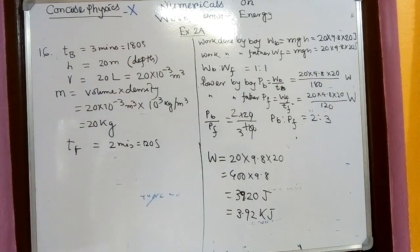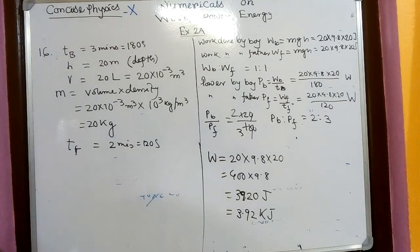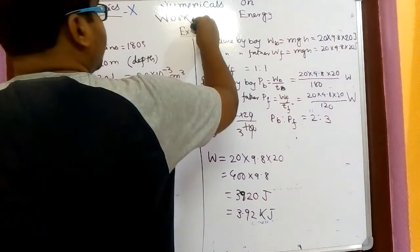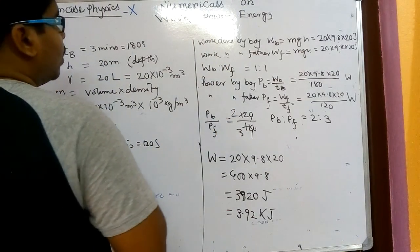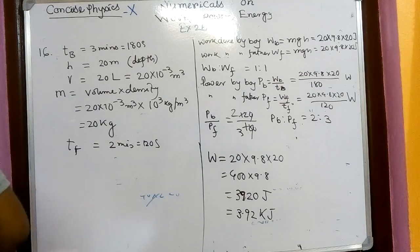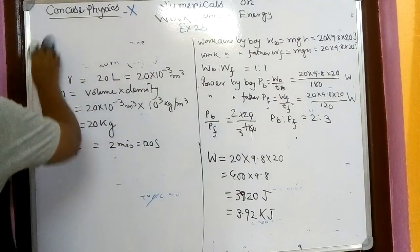Exercise 2A is completed — just copy it. Now we'll go for Exercise 2B. Here also we'll do two or three numericals, not much, because you can do the rest by your own. We will do question number 18, then question number 21, then 22. If you do these numericals only I think it is enough.